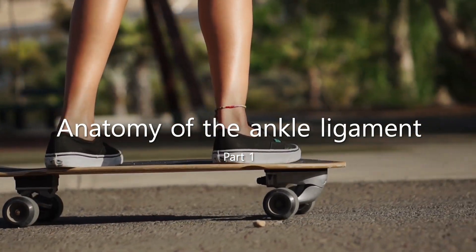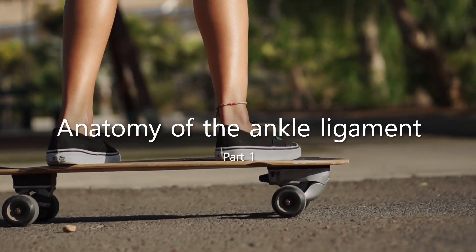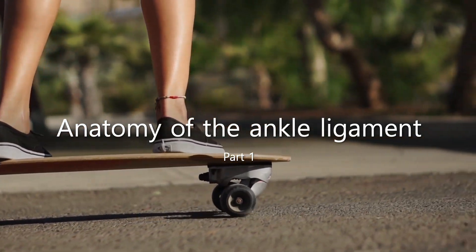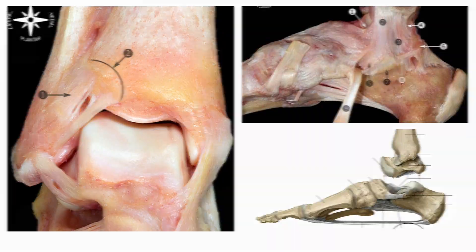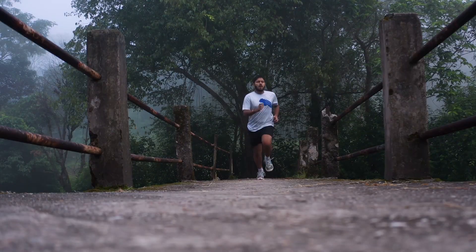Unlike any other joint, the ankle relies extensively on its passive structures. These include the intricate network of ligaments and the specialized geometry of the bones. This complex design efficiently supports prolonged standing and conserves energy by minimizing the need for active muscular engagement. The ligaments, in particular, ensure robust stability and play a crucial role in proprioception, providing sensory feedback essential for precise movements.